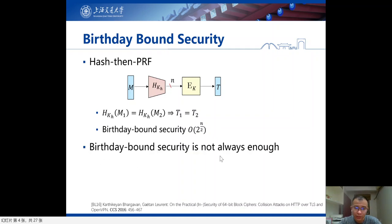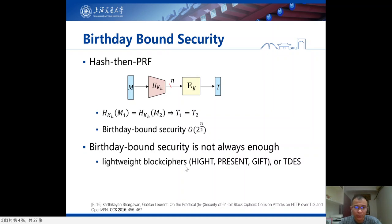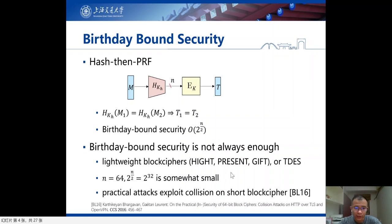But the birthday bound security is not always enough in practice, especially when the MAC is instantiated with lightweight block ciphers such as HIGHT, PRESENT, or GIFT, or the legacy block cipher Triple-DES. These block ciphers have a short block size of 64 bits, so the birthday bound security becomes 2 to the 32, which is somewhat small and vulnerable in some applications. For example, Bhargavan and Leurent demonstrated two practical attacks exploiting collisions on short block ciphers to break the security of TLS and OpenVPN protocols.